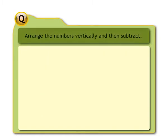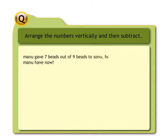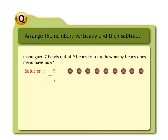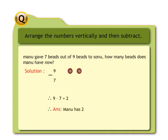Question: given problem sums of subtraction, let's arrange the numbers vertically and then subtract. If Manu gave seven beads out of nine beads to Sonu, how many beads does Manu have now? Solution: place the bigger number nine at the top, put a minus sign to the left, write seven below nine. Draw nine dots, score out seven dots — two dots remain. Hence nine minus seven equals two. So the answer is Manu has two beads now.